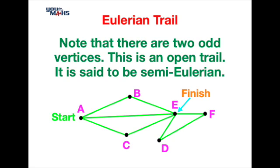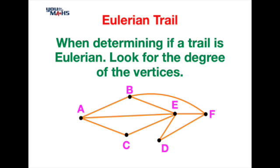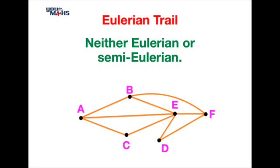So whilst we can test a graph as being Eulerian, semi Eulerian or neither of those two by actually traveling across the network, a quicker way is to have a look at the degrees of the vertices. So in this particular case here we can see that there are several vertices which are odd. A's got degree 3, B's degree 3, E's degree 5, and F is degree 3. That's four odd vertices. So we can say that this particular graph is neither Eulerian or semi Eulerian.